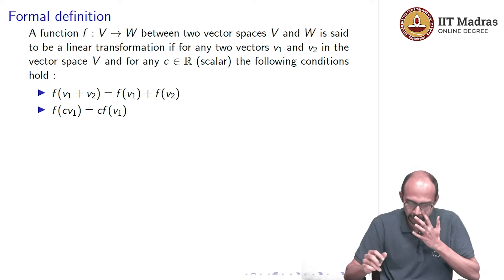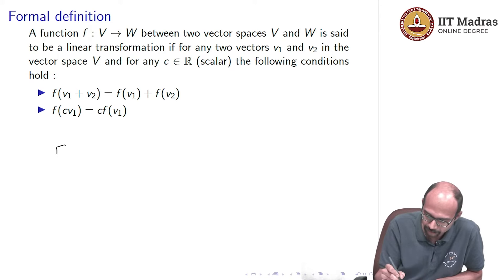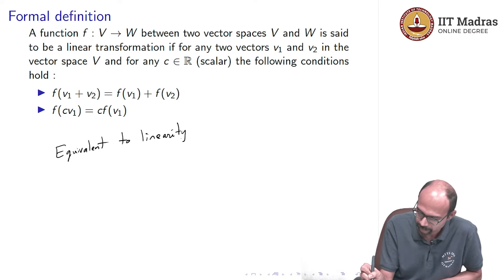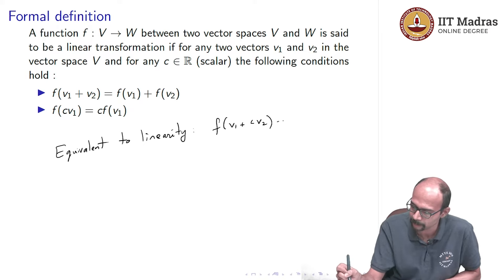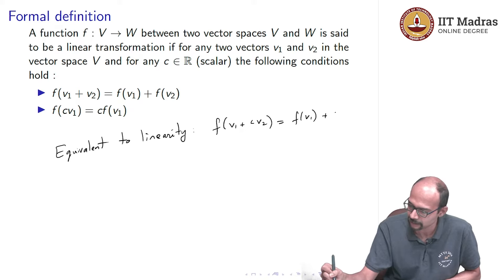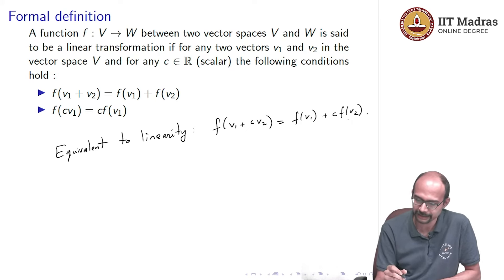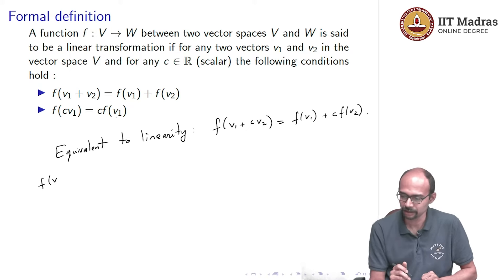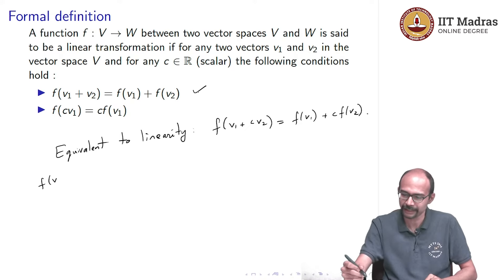This is equivalent to the linearity condition from the previous slide, which said f(v1 + c·v2) = f(v1) + c·f(v2). Why? If we assume linearity holds, both conditions follow: putting c = 1 gives the first condition, and taking v1 = 0 and relabeling gives the second.